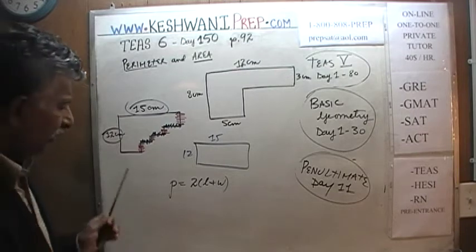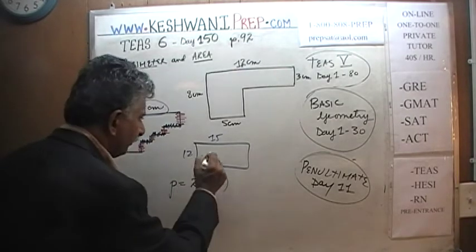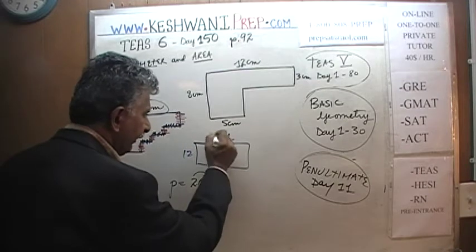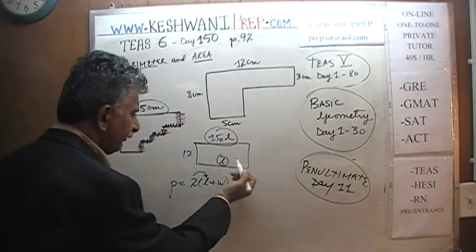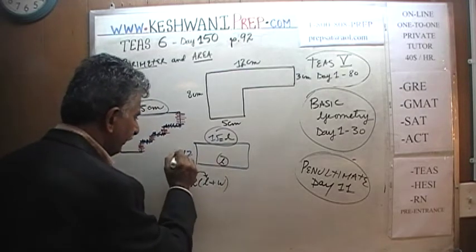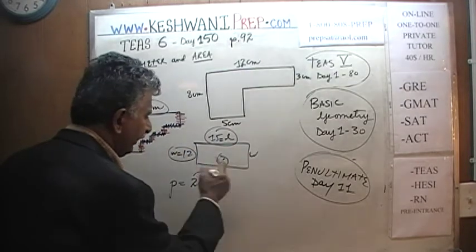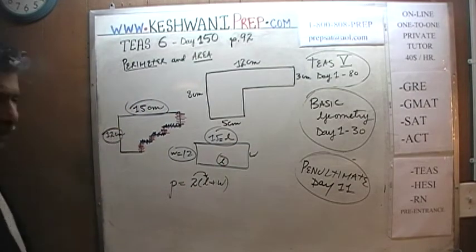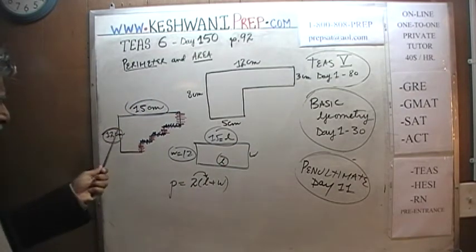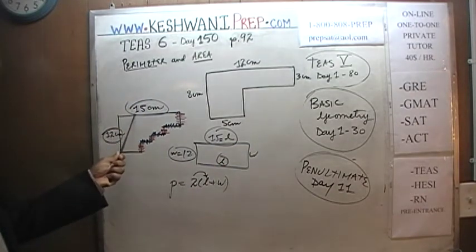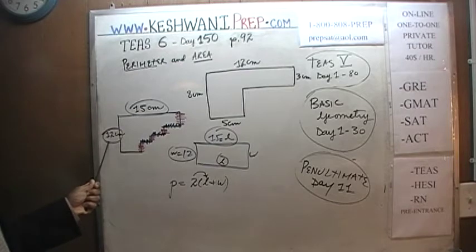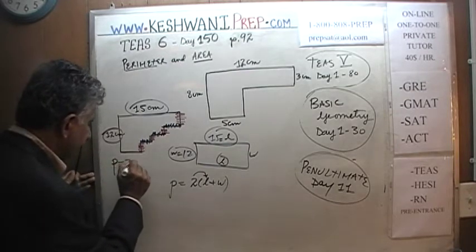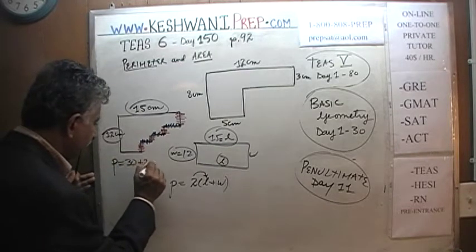Why two times? Because there are two lengths and two widths. So it's going to be 2 times 15, which is 30, plus 2 times 12, which is 24. The perimeter of this figure is 30 plus 24. And for our shape — length 12 and width 8 — 12 plus 8 is 20, so the perimeter is 40.